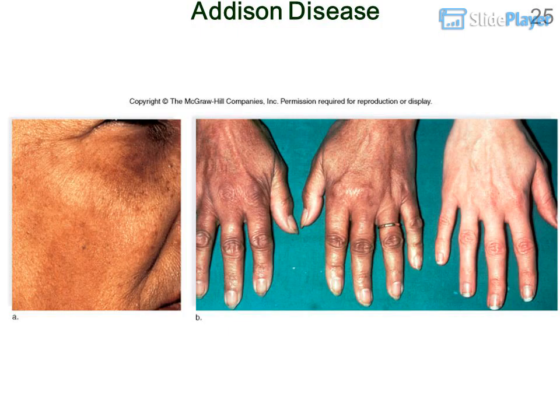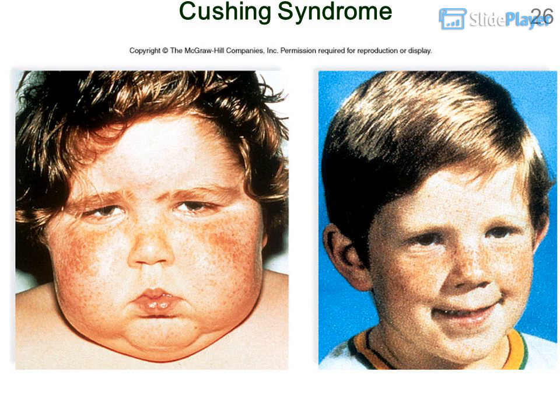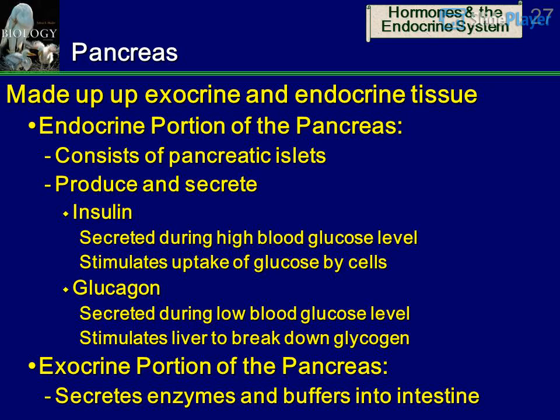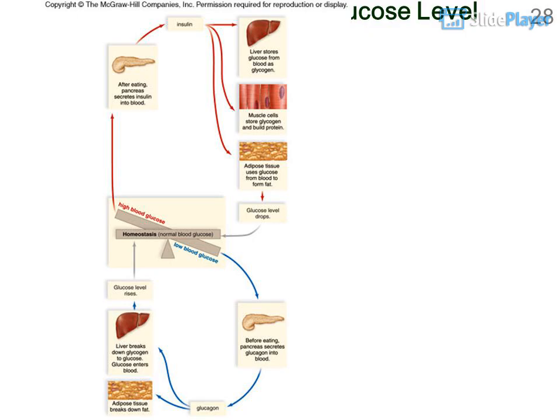Adrenal disorders include Addison's Disease and Cushing's Syndrome. Pancreas: Made up of both exocrine and endocrine tissue. The endocrine portion consists of Pancreatic Islets, which produce and secrete Insulin — secreted during high blood glucose, stimulates uptake of glucose by cells — and Glucagon — secreted during low blood glucose, stimulates the liver to break down glycogen. The exocrine portion secretes enzymes and buffers into the intestine. This describes regulation of blood glucose level.